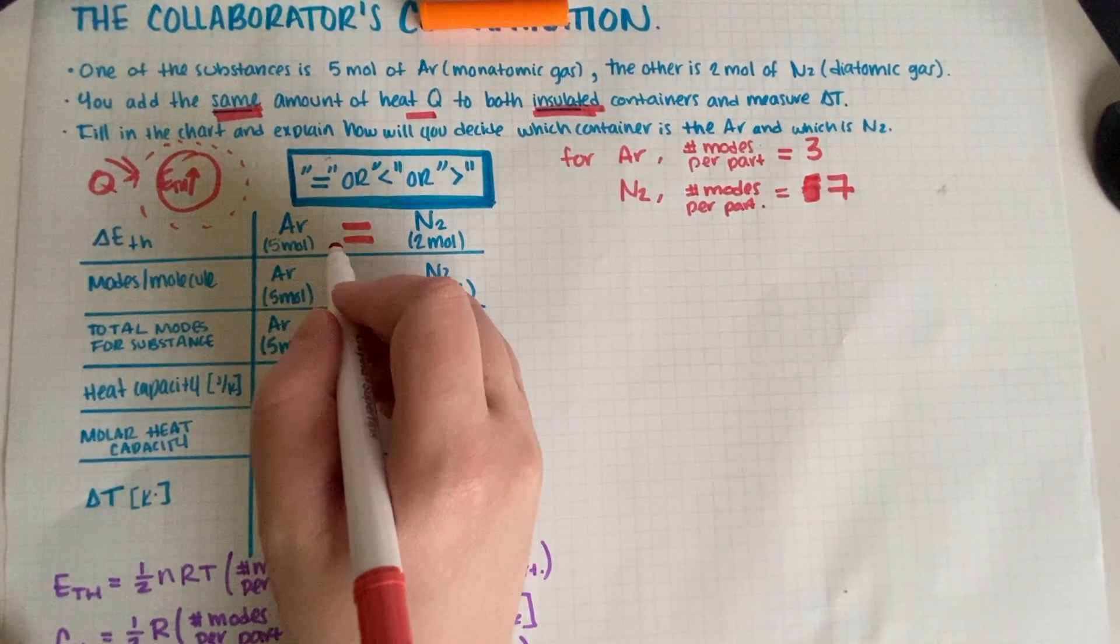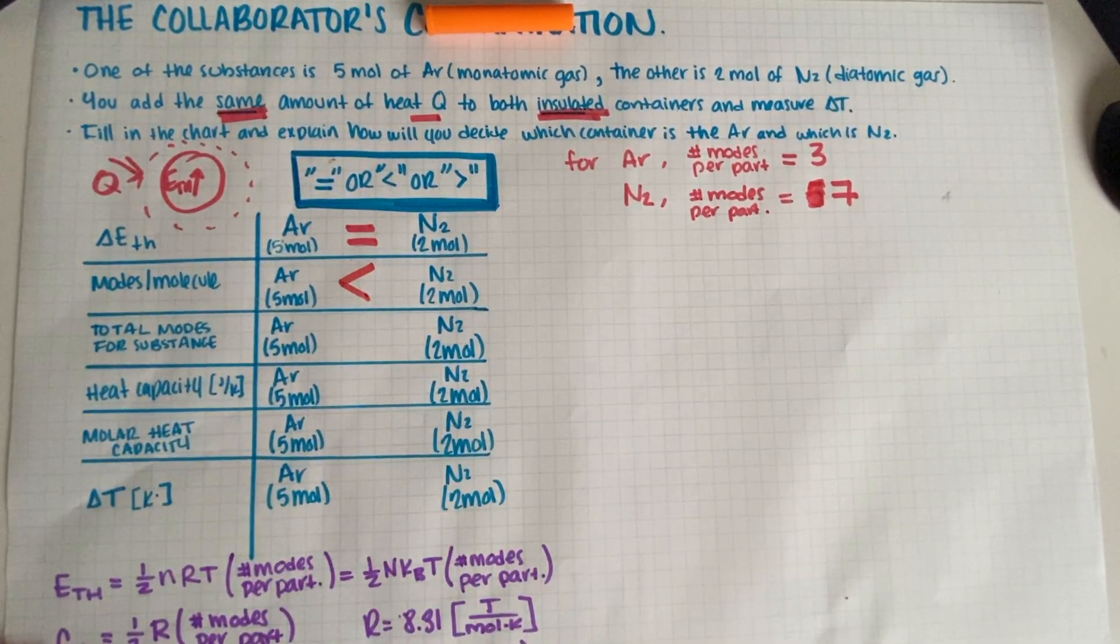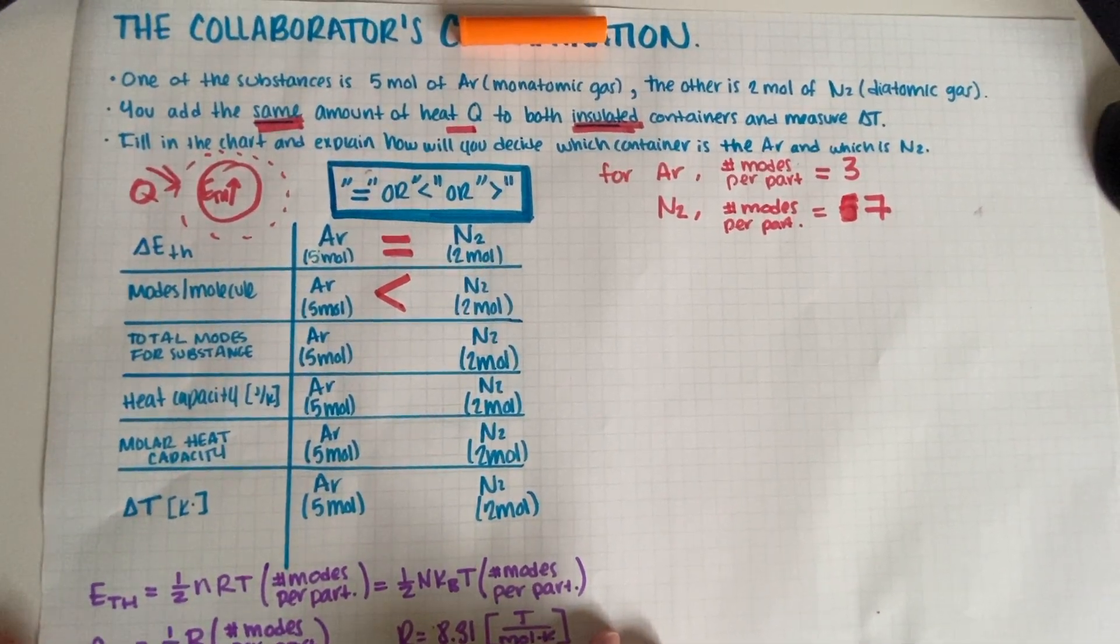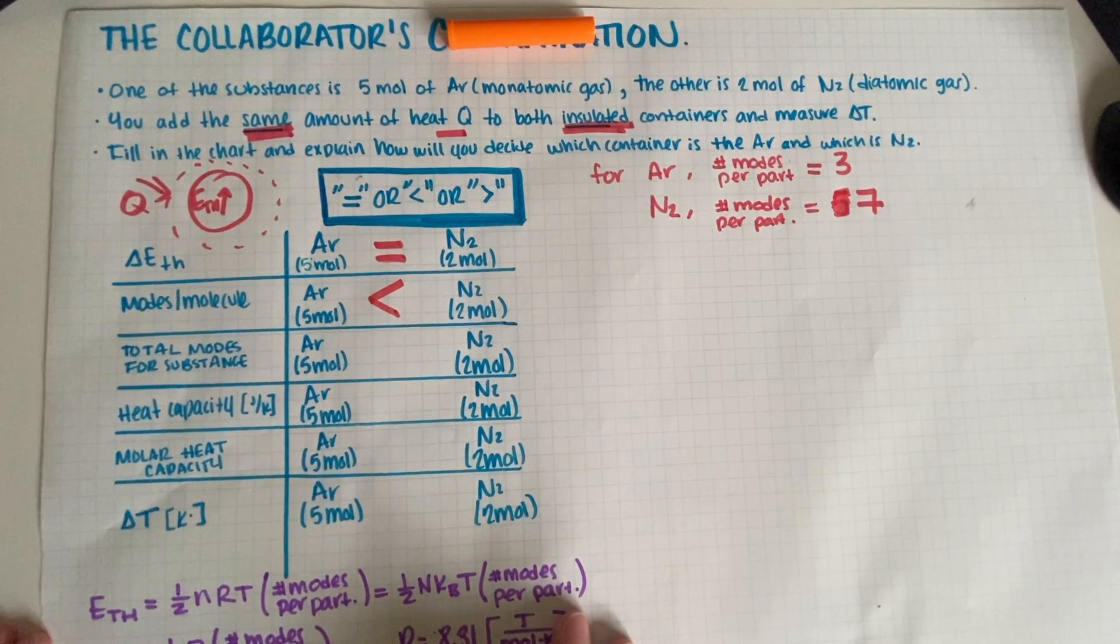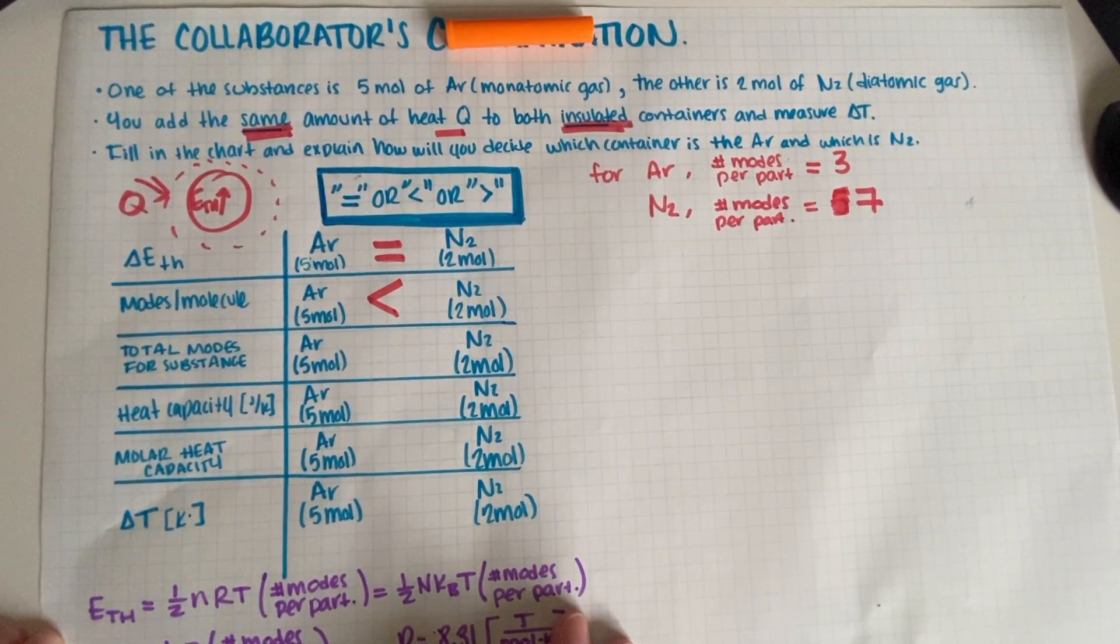It doesn't change our answers because whether it's five or seven, it's still gonna be greater than three. So we're just gonna go ahead and select our answer. I'm gonna assume seven for the rest of the problem, but if you know that at room temperature the vibrational ones are gonna be frozen, then that's perfectly fine.